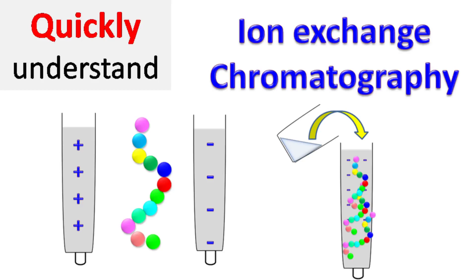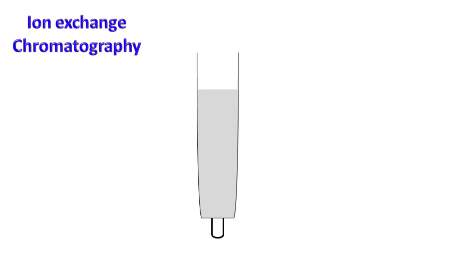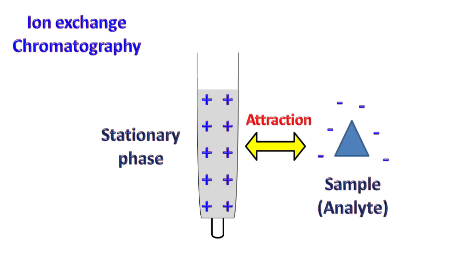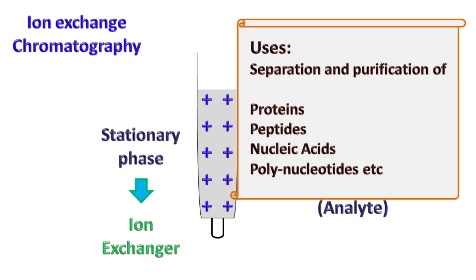Welcome to chemistry basics. Let's talk about ion exchange chromatography. Ion exchange chromatography is based on the phenomenon of attraction between opposite charges. The stationary phase is selected such that it has a particular charge and attracts the sample molecules with the opposite charge. The stationary phase is also known as the ion exchanger.